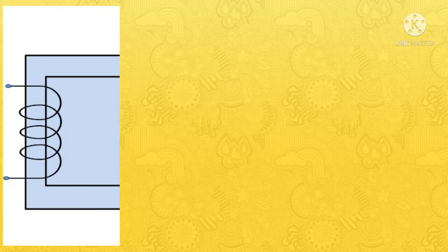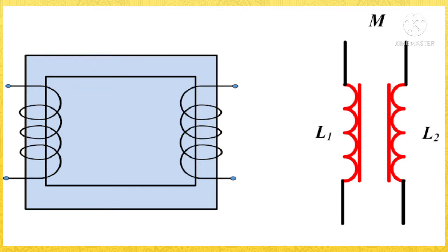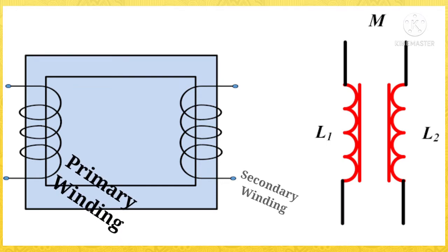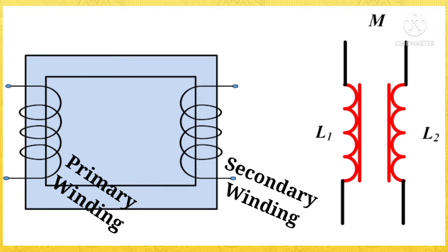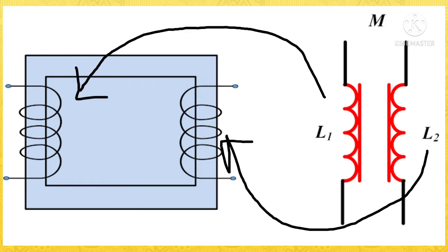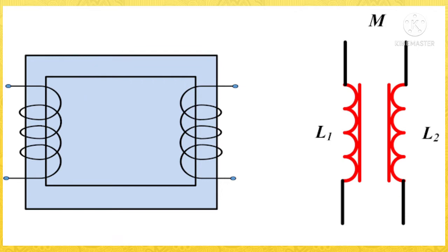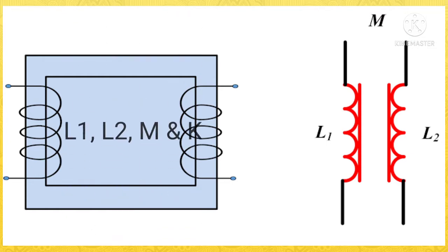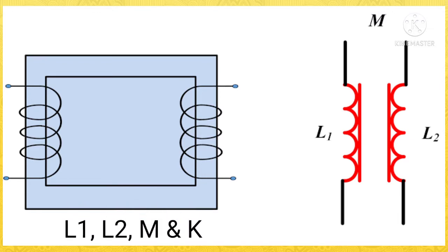We all know that in a transformer there are two windings — one is the primary winding and another one is the secondary winding. If we assume the inductance of the primary winding as L1 and the inductance of the secondary winding as L2, and as we also have a mutual flux which links both the windings, we have the third inductance which is the mutual inductance M. In this experiment we will determine four parameters: self inductance L1, self inductance L2, mutual inductance M, and the coefficient of coupling K.